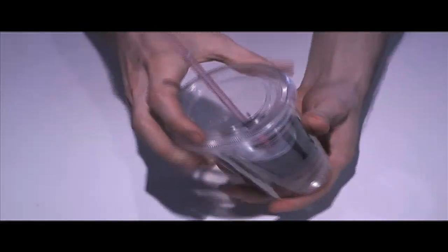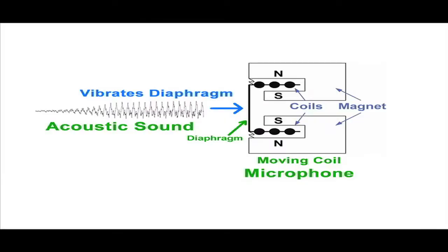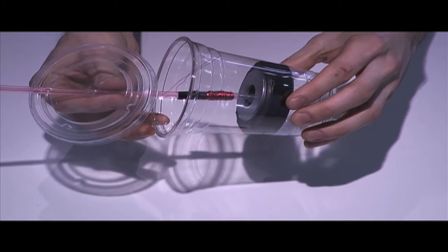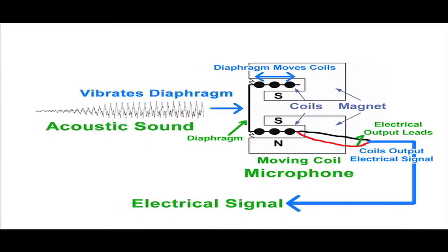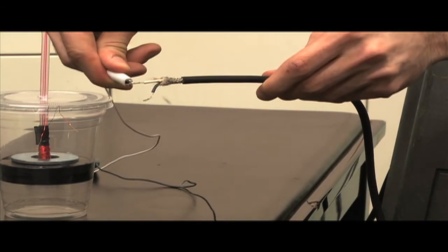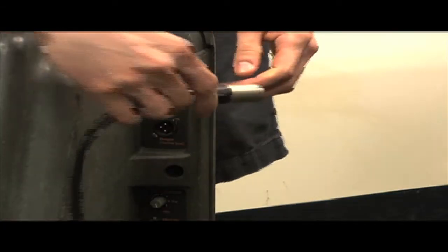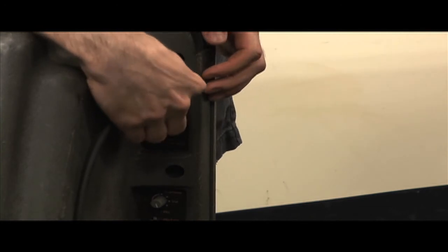Sound vibrates the lid, which acts as the diaphragm. Because it's attached to the straw, this vibration of the diaphragm moves the coil. The coil is suspended in the center of a ring-shaped magnet, therefore its movement generates an electrical signal throughout the coil. This signal can be connected to an amplifier and speaker, and the sound picked up by the cup microphone will be reproduced by the speaker.